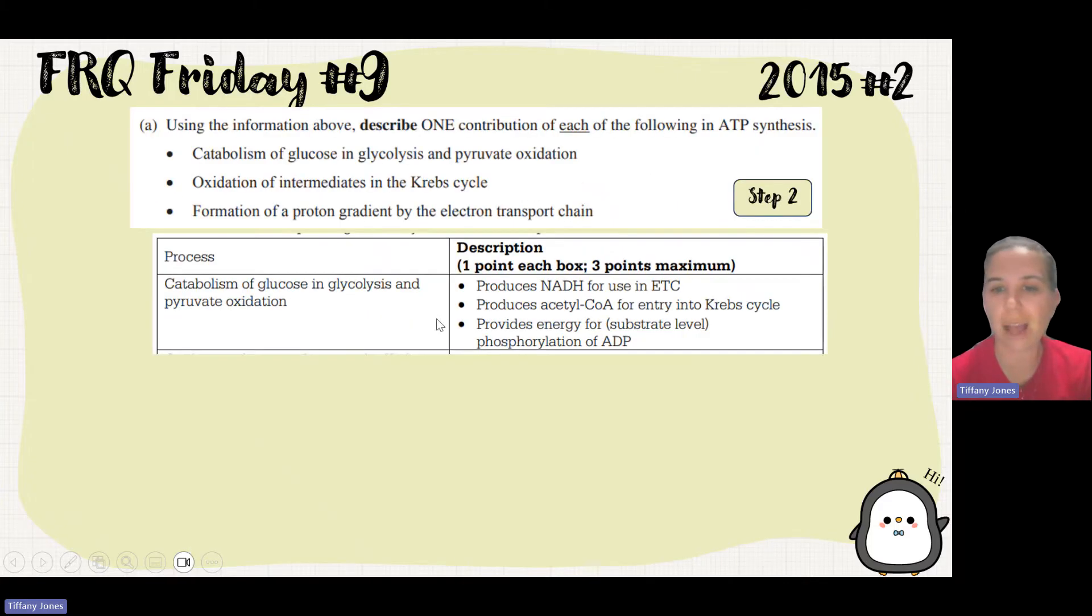If we look at the scoring guidelines, the options are produces NADH for ETC, produces acetyl-CoA for entry into Krebs cycle, and then of course producing the energy for substrate level phosphorylation of ADP.